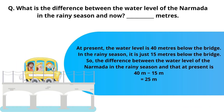What is the difference between the water level of the Narmada in the rainy season and now? At present, the water level is 40 meters below the bridge. In the rainy season, it is just 15 meters below the bridge. So, the difference is 40 meters minus 15 meters, which is equal to 25 meters.